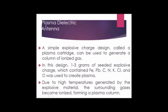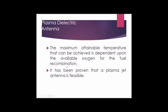The third type is the plasma dielectric antenna. A simple explosive charge design, called a plasma cartridge, can be used to generate a column of ionized gas. A 1 to 3 gram seeded explosive charge containing Fe, Pb, C, N, K, C, N — specifically NO — was used to create plasma. Due to the high temperature generated by the explosive material, the surrounding gases become ionized, forming a plasma column. Maximum temperature is dependent on the available oxygen (O) for fuel recombination. It has been proven that the plasma dielectric antenna is feasible.